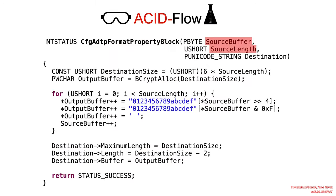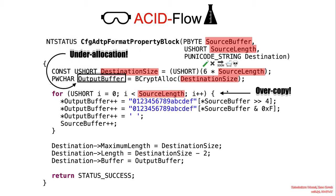Let's trace the data flow first. We can see that source length is used to determine destination size by performing a multiplication. The destination size is then used for an allocation. There is a potential for integer overflow in this flow, so destination size has a potential to be incorrect, which will yield an overcopy, given that we're using source length as the bound for the copy instead of destination size.